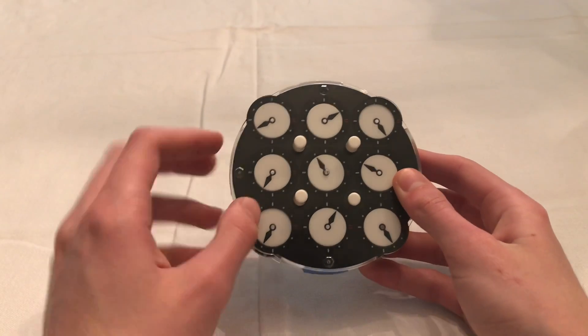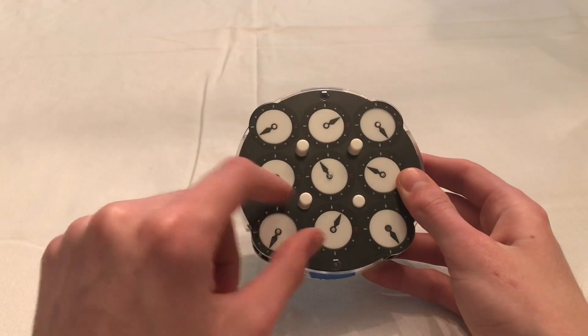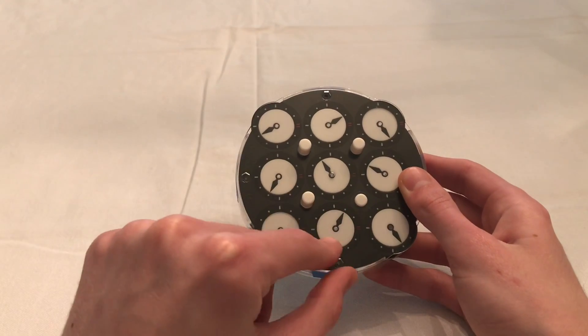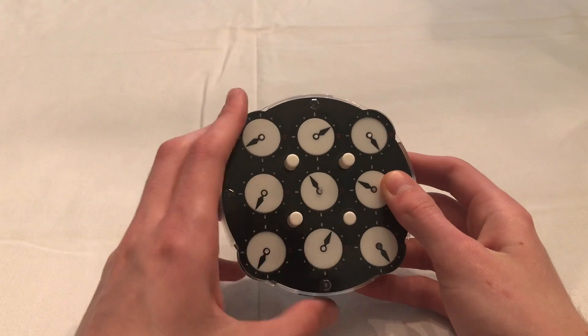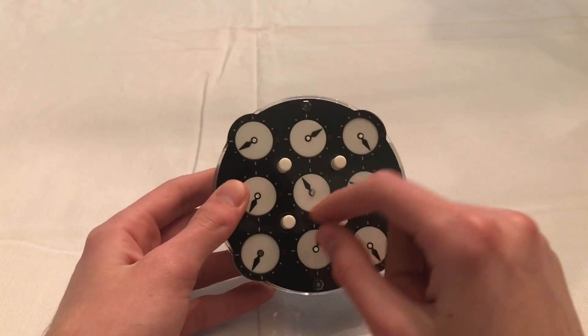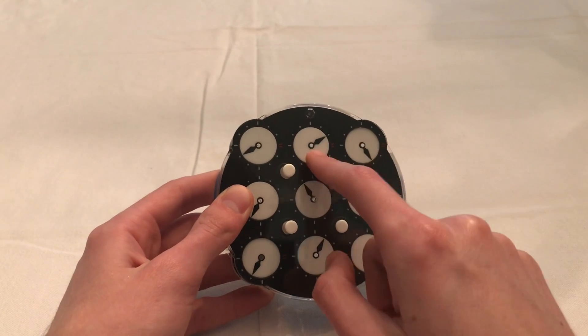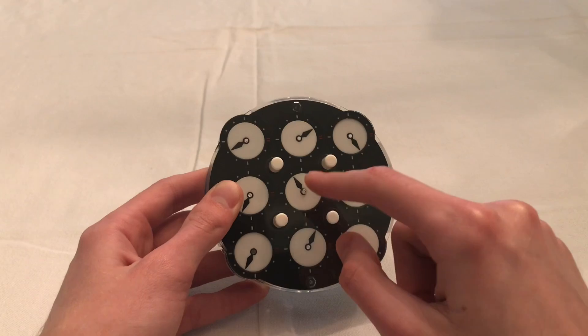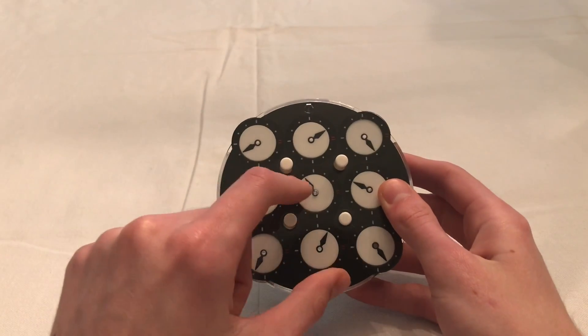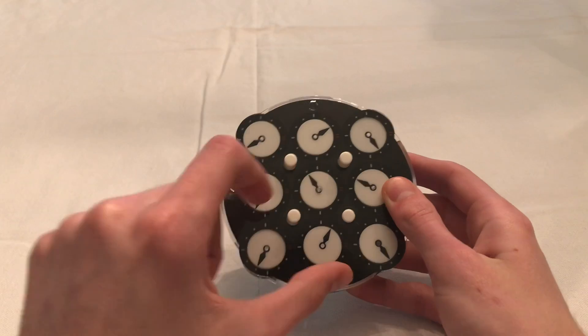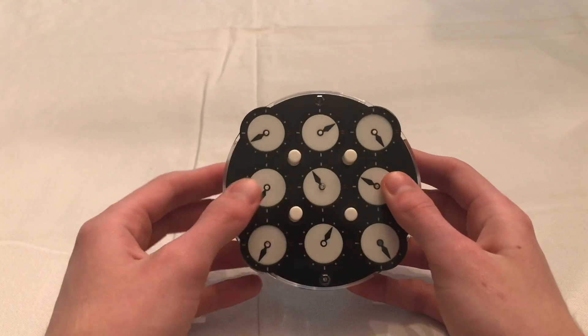M2 is L minus D, just like before, 7 minus 1, which equals 6. M3 is C minus U, which is 11 minus 2, which is equal to 9, which is equal to negative 3. M4 is 11 minus 7, which is equal to negative 4.